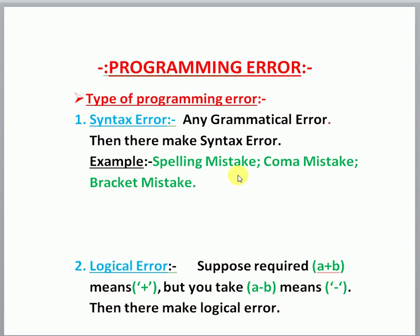What is a syntax error? Any grammatical error in a programming language is called a syntax error. For example, spelling mistakes, comma mistakes, bracket mistakes, or any other similar mistakes — these types of mistakes are called syntax errors.